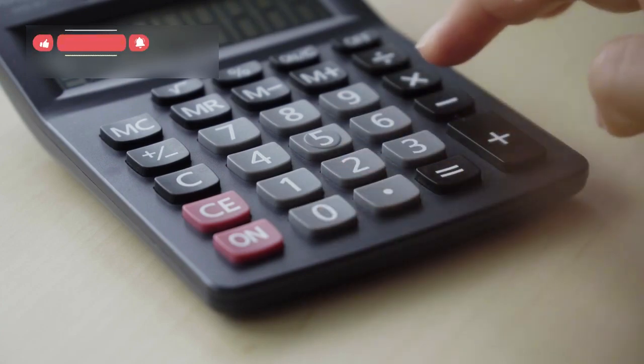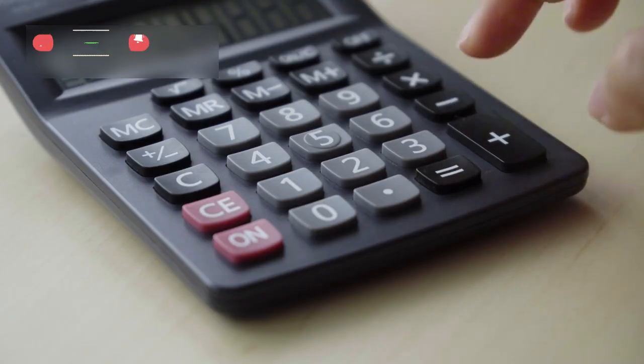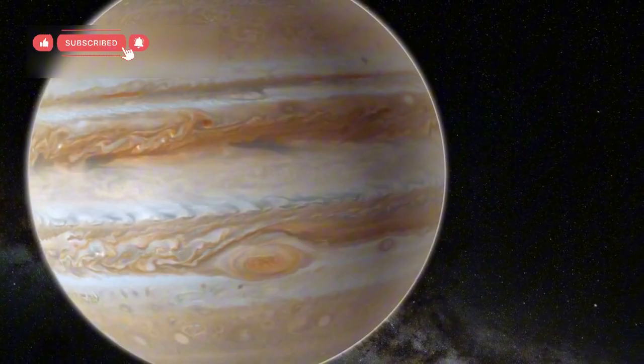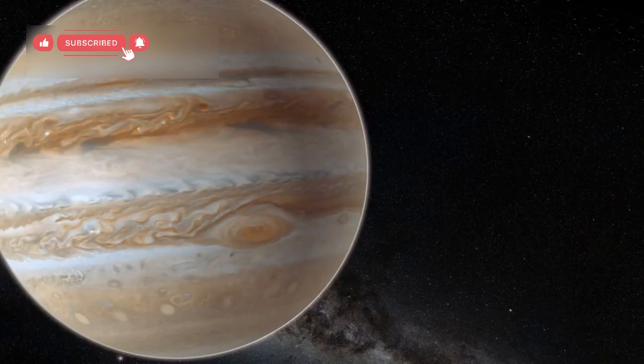Voyager 1, built using technology weaker than a modern calculator, exceeded every expectation. As it approached Jupiter, it captured incredible images of the planet's massive storms, including the famous Great Red Spot.